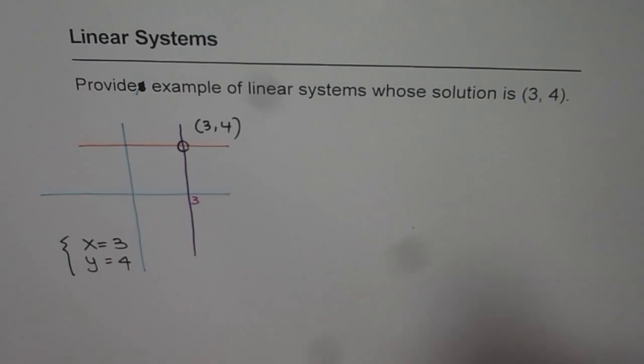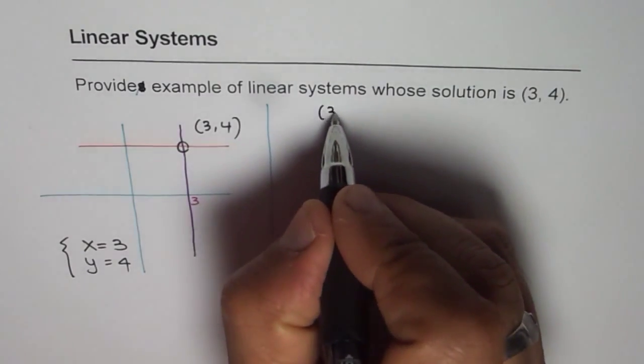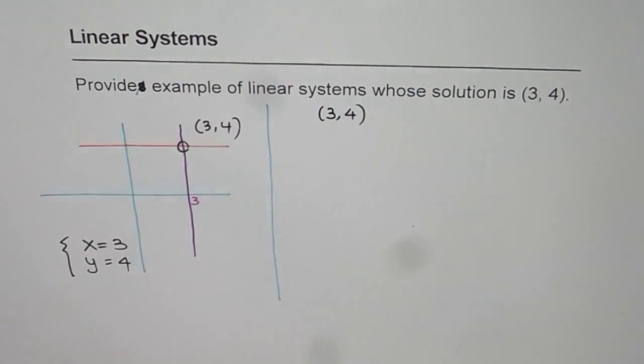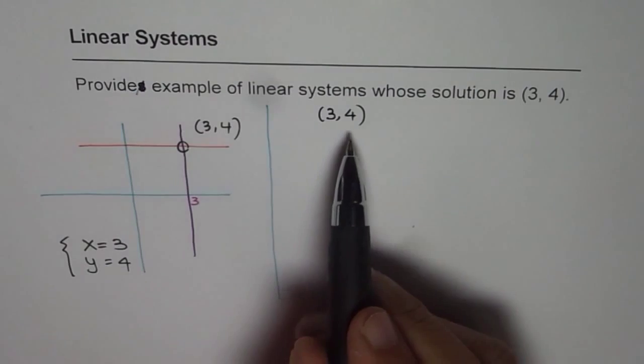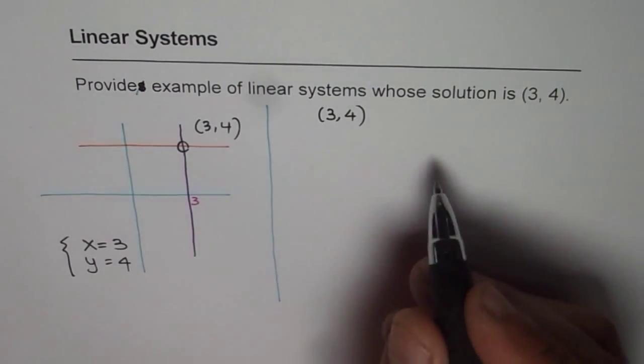Now, if you don't get this idea in the test, then what should you be doing? So let's look for an alternate solution. When we say that (3, 4) is the solution, that means one point, 3 and 4, is given to us, which is on both the lines.